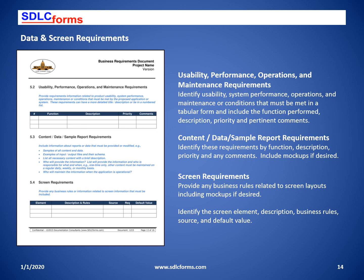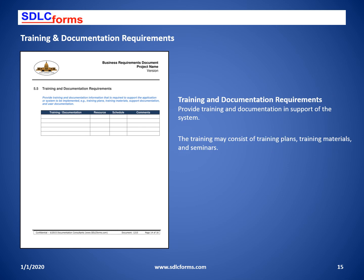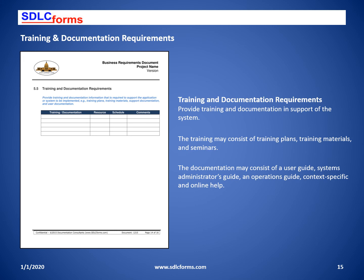Additional requirements that must be addressed are product usability, performance, and maintenance requirements. The content section includes data and report requirements and should include sample copies of all content and data, examples of input and output files, and their schema. Identify who will provide the information and whether content will be maintained on a daily, weekly, or monthly basis. Training may well be required for the user community, customers, and any support organizations, and documents should be developed to support those same organizations.